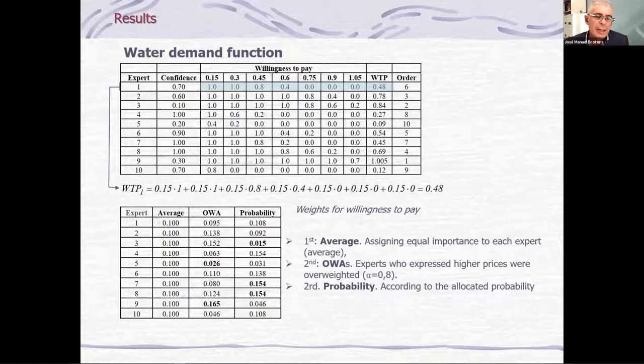This is the weights for each expert in each of the three methodologies. If we use average means, all the experts have the same weight. If we use probabilities, the expert with highest probability, the fourth, the seventh and the eighth, will have the highest priorities. And the expert with, for example, number three has a lower confidence. So he will have the lowest probability. And the OWA is considered disorder. The highest present the highest weight. And the lowest, the number five present the lowest weight.